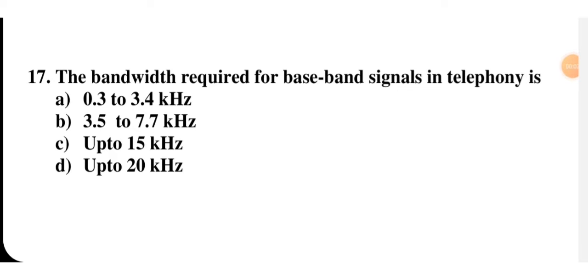Next question: the bandwidth required for baseband signals in telephone is 0.3–3.4 kHz, 3.5–7.7 kHz, up to 15 kHz, or up to 20 kHz. Generally 3 kHz is used, so the range is 0.3 to 3.4 kHz. A baseband signal is the modulating signal — the signal which is not yet modulated.